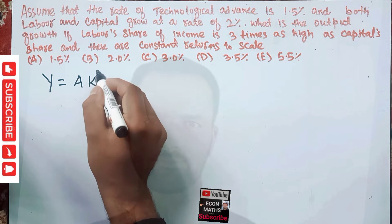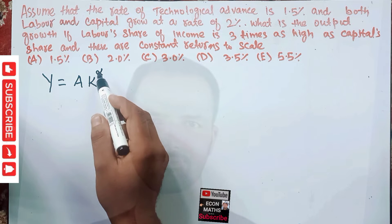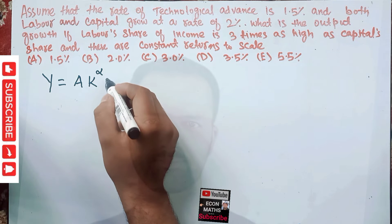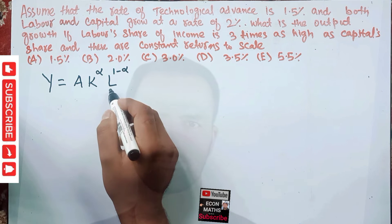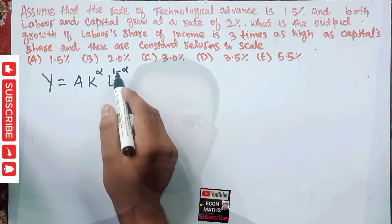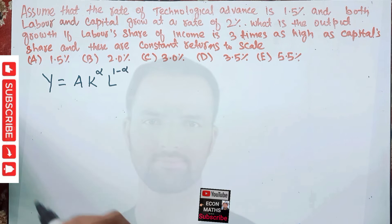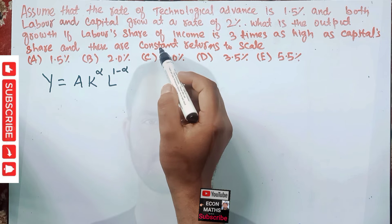...times K to the power alpha, where K is the capital and alpha is what we call the capital share in total output, times L to the power (1 minus alpha), where L is the number of labor hours employed and (1 minus alpha) denotes the labor share in the total output. This is our standard Cobb-Douglas production function.